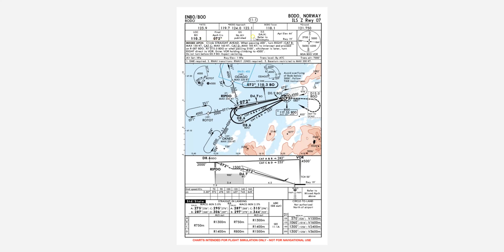The final approach course for the approach is 072 degrees, and we need to come down to the bottom of the chart for the decision altitude. There are four decision altitudes for categories A, B, C, and D — these are for different approach speeds and different categories of aircraft. The slower the aircraft, they use A and B; D is for faster aircraft. Fighter jets like the F-16 have really fast approach speeds, so we're going to use category D, which gives us a decision altitude of 306 feet.